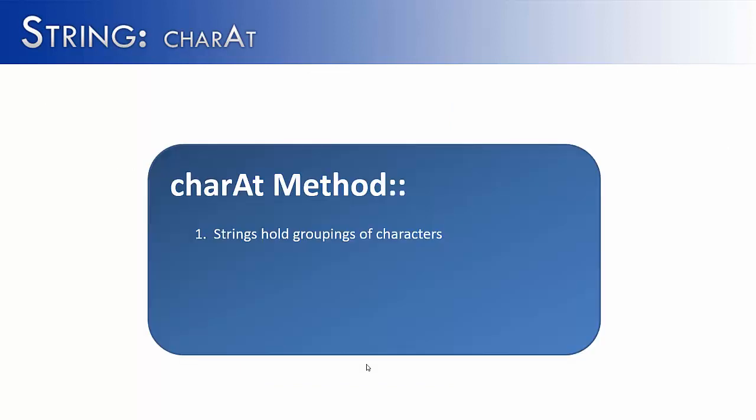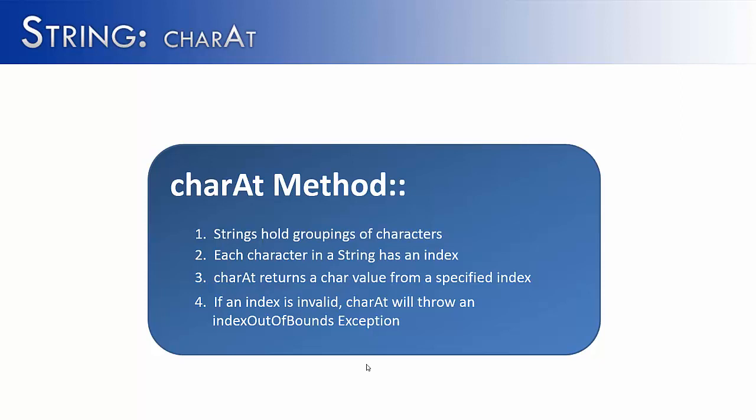In order to understand the charAt method, you need to understand that strings hold groupings of characters. And each one of those characters has an index associated with it that's always going to start at zero. If you want to pull one of those characters out and utilize it, you're going to use the charAt method. And remember, it's going to return a character, not a string. So you have to follow the rules of characters when using the value that is returned. And lastly, if you try to use an index that is not within that string, you're going to get an error. And the error is going to be index out of bounds. The charAt method is an important tool within the string class. It allows you to look at a specific character, and as long as you handle it correctly, it will be a valuable tool.